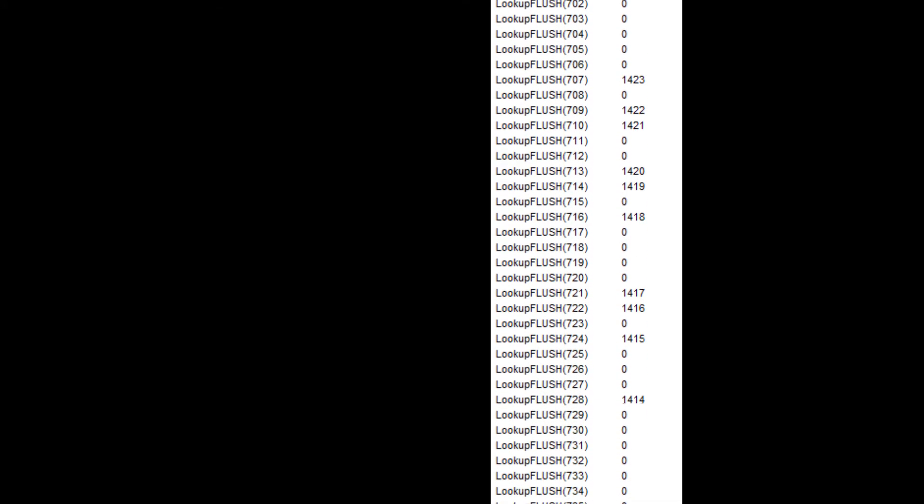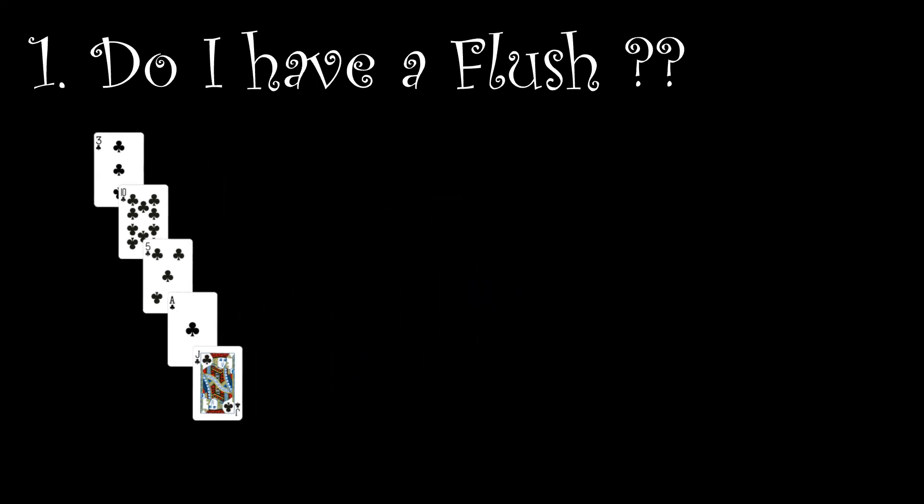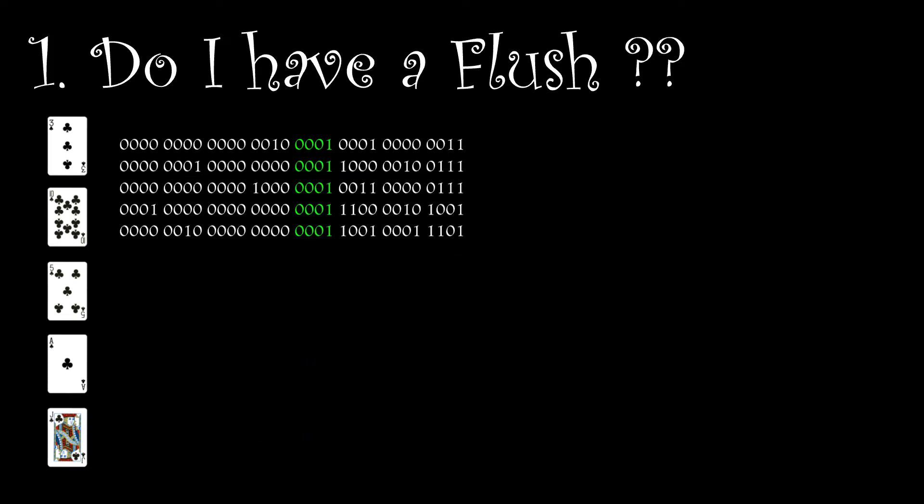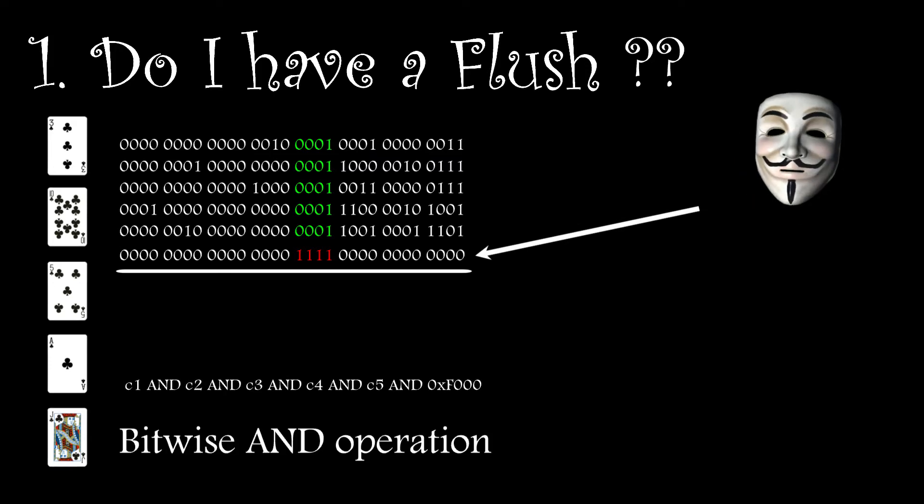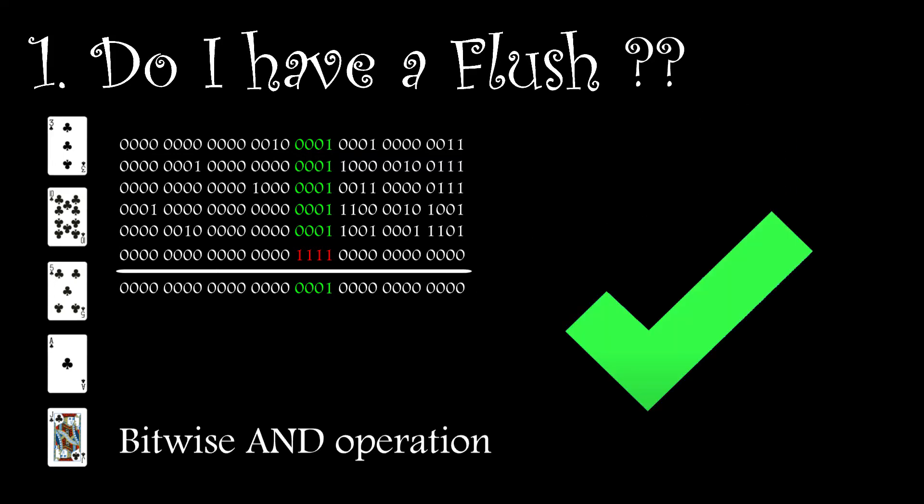And how do I do this? Well, that brings us back to question number one. Do I have a flush? Look at the example here. Clearly it's a flush, but how do I check it based on what we've done so far? The first thing to do is look at the bit patterns for the cards and apply a bit mask to them, using a bitwise AND operation. If this yields a non-zero value, then we have a flush. That's the first check.